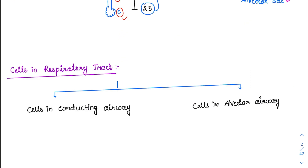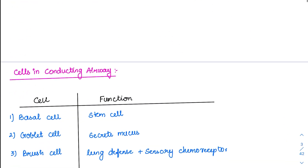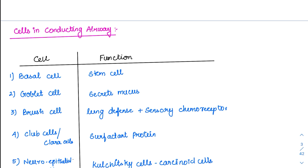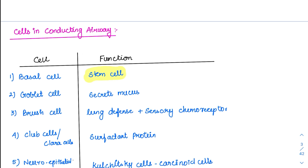Now coming to the cells in the respiratory tract. The cells are divided into cells in the conducting zone and cells in the alveolar zone. The cells in the alveolar zone are very very important. In the conducting zone, first is the basal cell — the basal cell is the stem cell of the respiratory tract. Whenever any epithelium is getting damaged and has to be replaced, it is done with the help of these stem cells called basal cells.